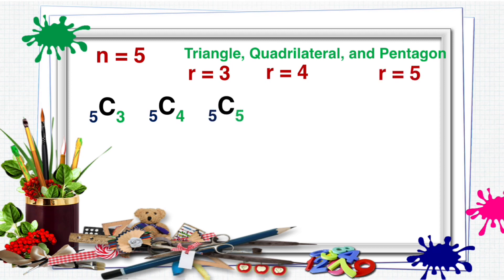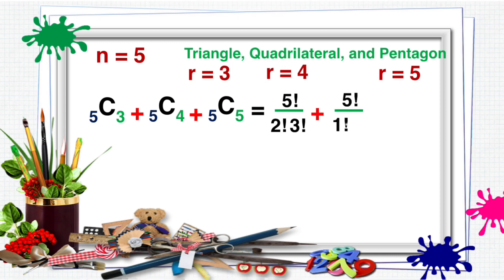Add the combinations since the total number of polygons is needed. That is equal to 5 factorial all over 5 minus 3, which is 2 factorial, times 3 factorial; plus 5 factorial all over 5 minus 4, which is 1 factorial, times 4 factorial; plus 5 factorial all over 5 minus 5, which is 0 factorial, times 5 factorial.